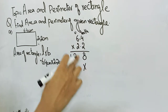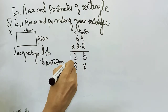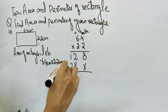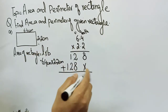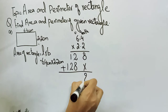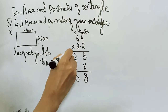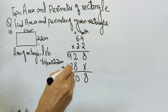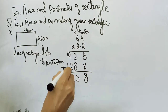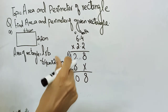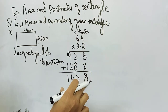Two fours are eight and two sixes are twelve. Now as the digits are finished, we add them up. Eight stays as it is; eight plus two is ten, zero here and one goes carry; two plus one is three; and one carry four. One will remain as it is.